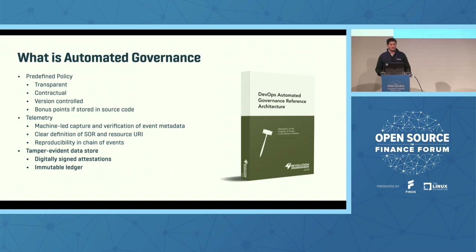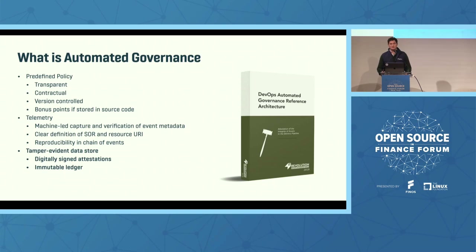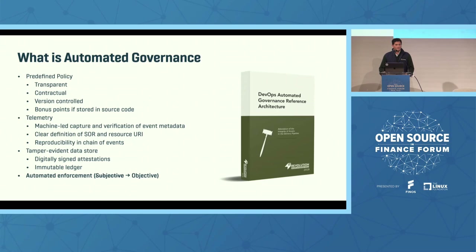The third piece is the tamper-evident data store — digitally signing your attestations so they can be immutably stored in a database. At the time of deployment, when accessing these attestations, if the signatures don't match, you know it's untrusted, which protects against tampering with the evidence. The last piece is automated enforcement, which takes the subjective portion of authorization at the time of release and makes it completely objective.